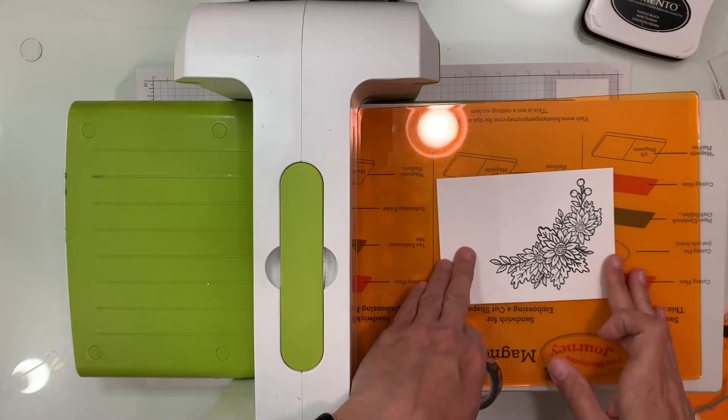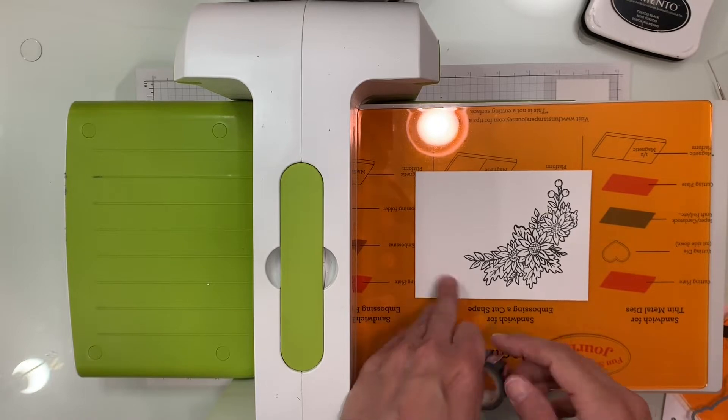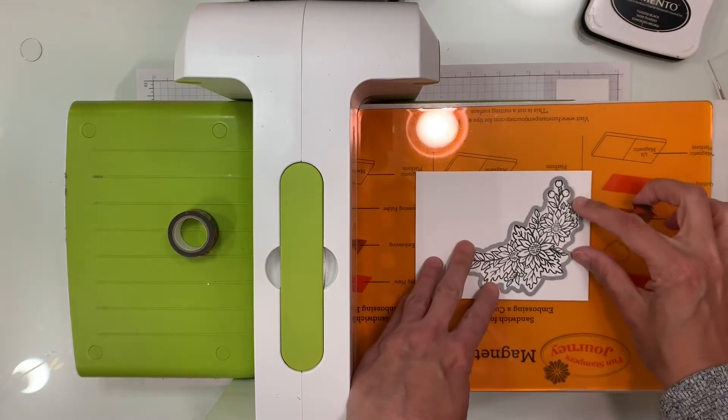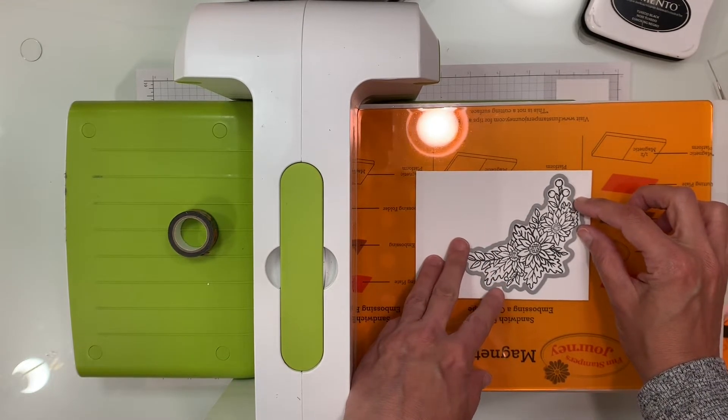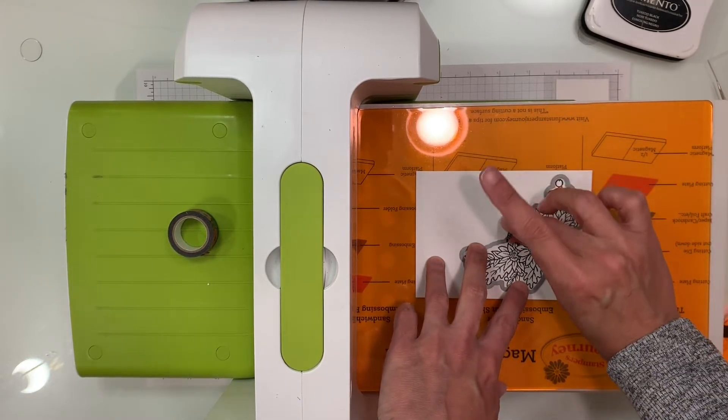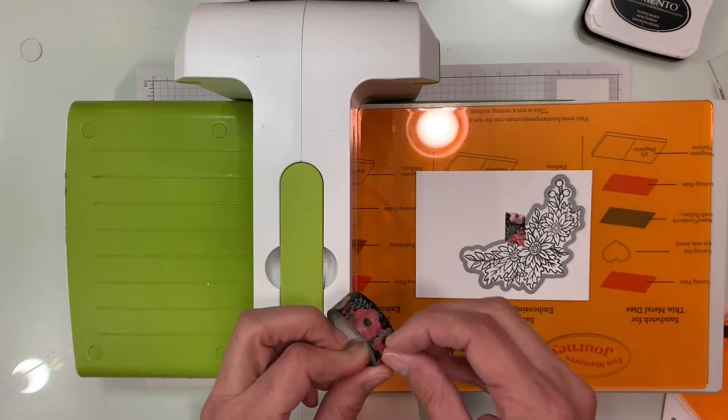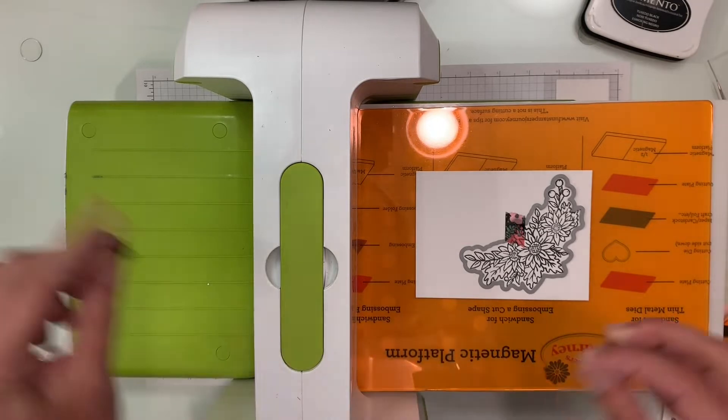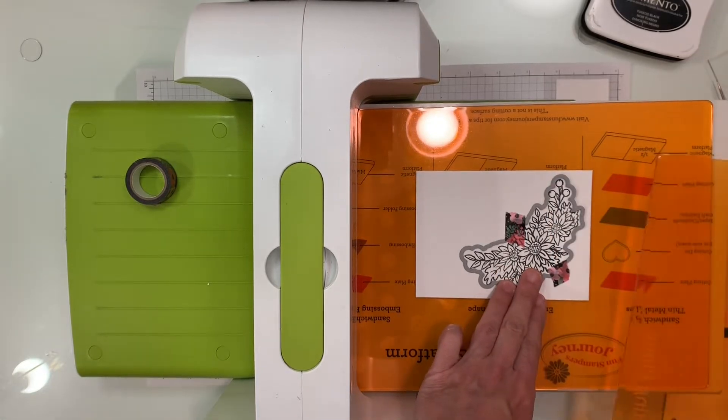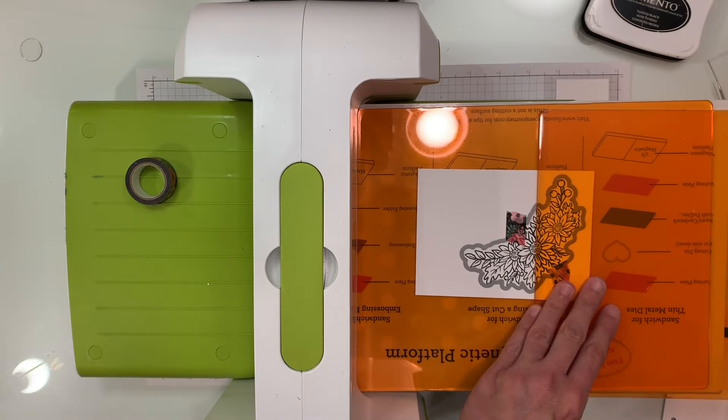Okay, so now that we have the image stamped, we're going to go ahead and do the partial die cutting and this is pretty straightforward since I want it cut towards the bottom. So what we're going to do is I'm going to put the die on the stamped image and I'm going to hold it in place with some washi tape just like so. We're just going to put a piece of washi tape right on there so it doesn't wiggle or move.